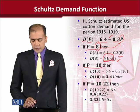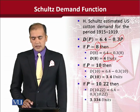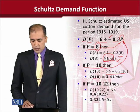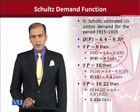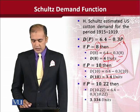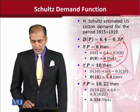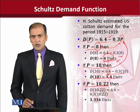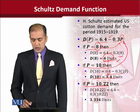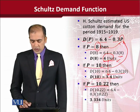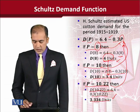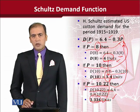Let us assume another possible value of price, that is 10. If I put 10 into that function, it gives me the answer which is 3.4 units. The answer has reduced from 4 to 3.4. I will take another value to ascertain the trend — that is 10.22. Putting this value into the function and solving, the answer is 3.334.